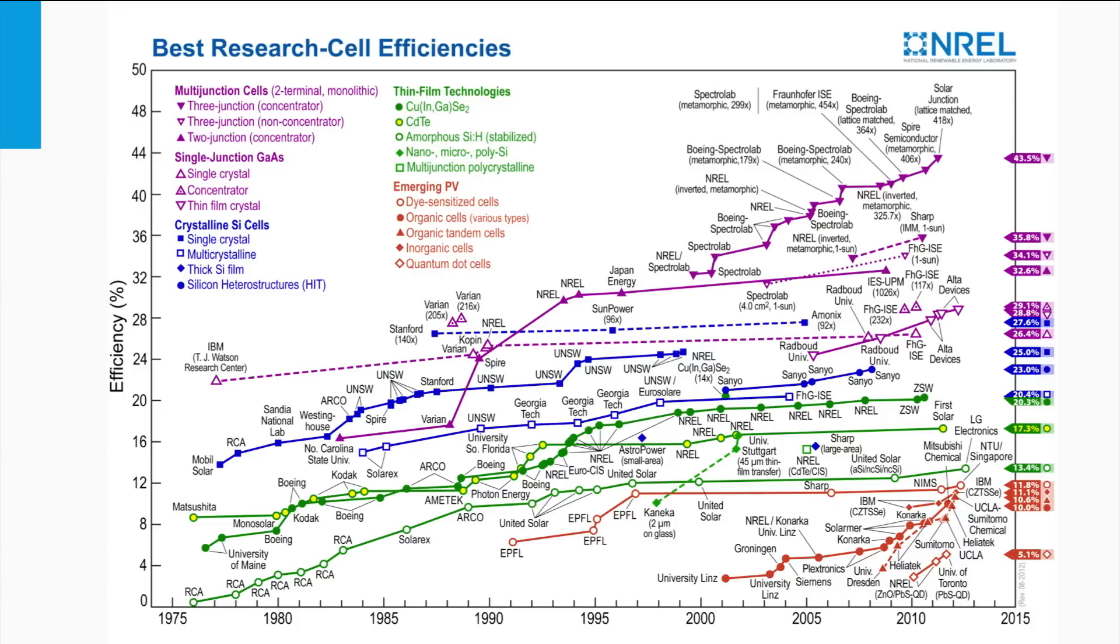The inorganic thin film technologies like thin film silicon, cadmium telluride and CIGS are indicated by the green markers, and their record efficiencies range from 13.4% up to 20%.